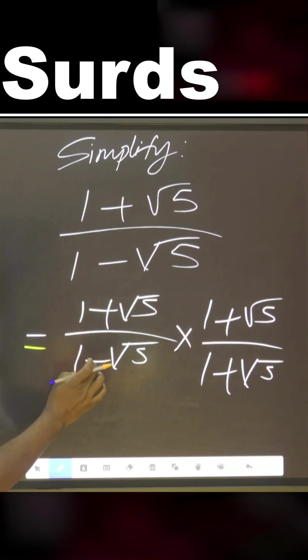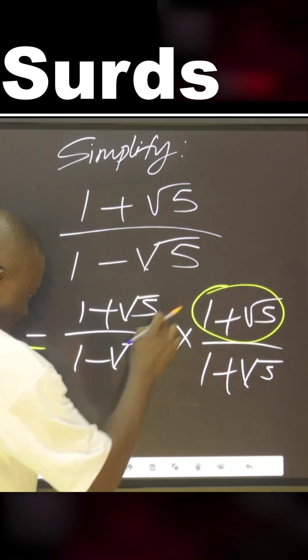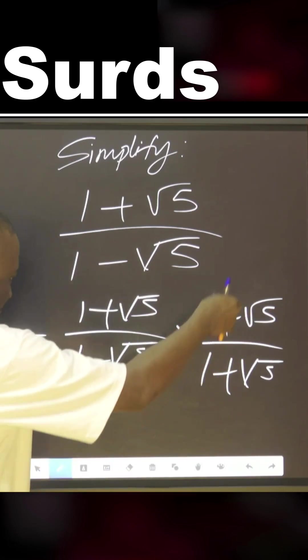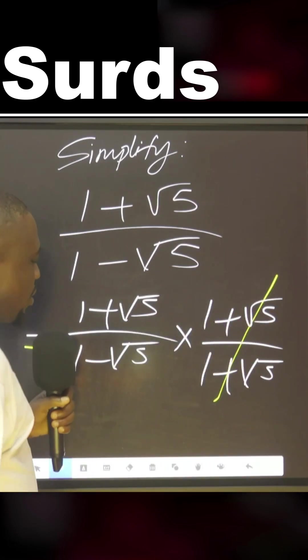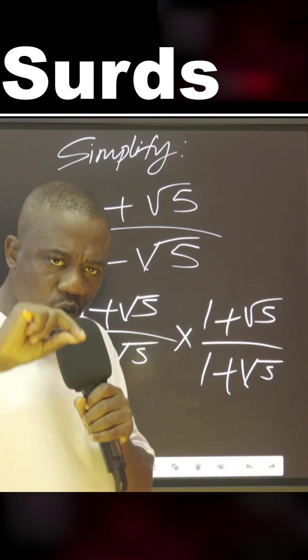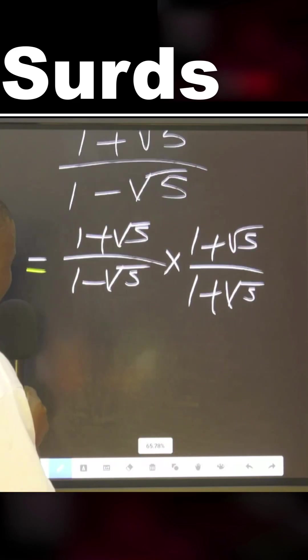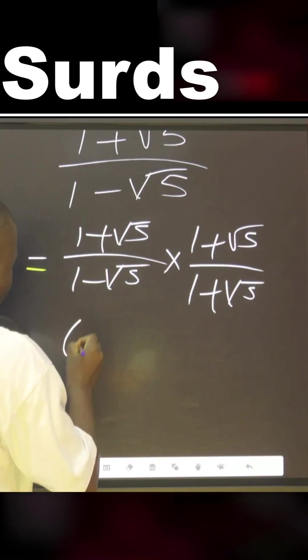That is conjugates. You can see they are the same, the only difference is the sign. Why are we doing this? Because if we start this out, it's not changing the original question. This is helping us to work to change the form of the denominator.